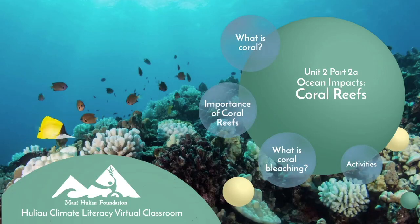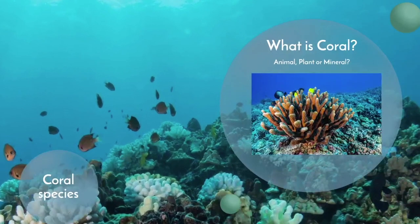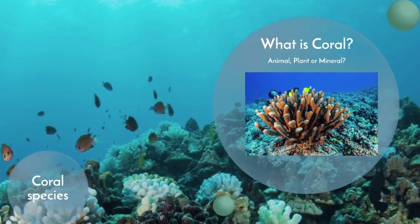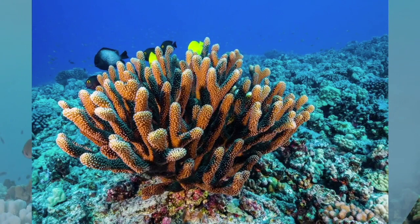Let's start with what is coral? Do you think it's an animal, a plant, or a mineral? At first glance, it resembles a rock, and when first described, scientists classified it as a plant. But it's actually an animal, even though many coral species also have mineral and plant components.